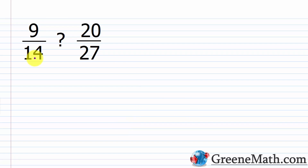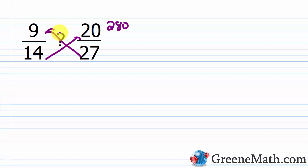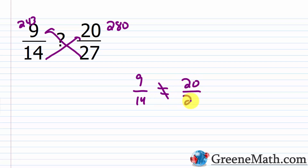Now let's look at another one. We have 9/14 and 20/27. We can check this by cross-multiplying: 14 times 20 — multiply 14 times 2 to get 28, put a zero at the end, so 280. And 27 times 9 is 243. These two cross-products are not equal, so 9/14 is not equal to 20/27.